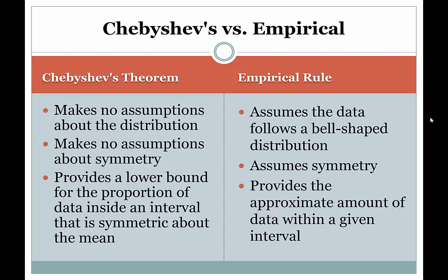Let's start with Chebyshev's theorem. The important thing about Chebyshev's theorem is that it makes no assumptions about the shape of the distribution. It doesn't assume bell-shaped, it doesn't assume uniform shape — it makes no assumptions whatsoever. Going with that, it also makes no assumptions about symmetry. So we can't assume that half of the data lies above the mean and half below the mean.